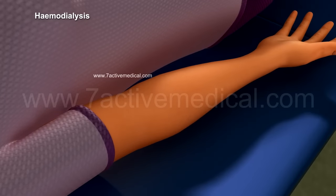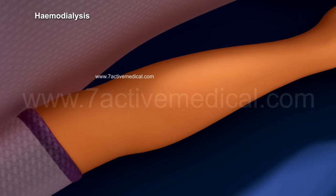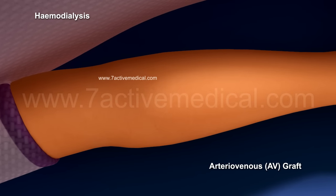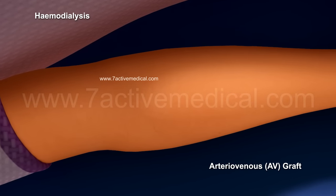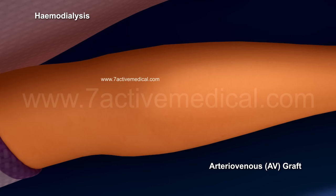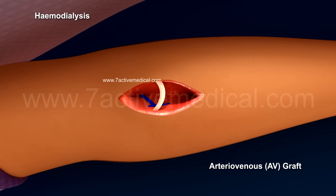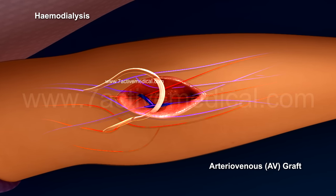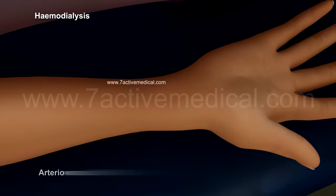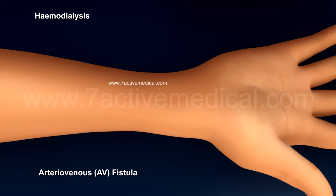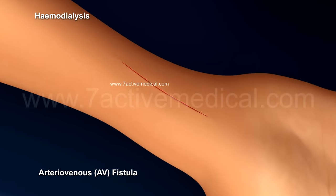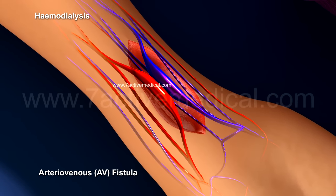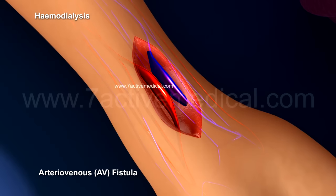A vascular access site is created by first numbing the area with local anesthesia and creating an arteriovenous graft by connecting one of the arteries with a vein with the help of a plastic tube, or an arteriovenous fistula by directly connecting one of the arteries with a vein. Once the graft or fistula has healed, hemodialysis could be performed for the patient.